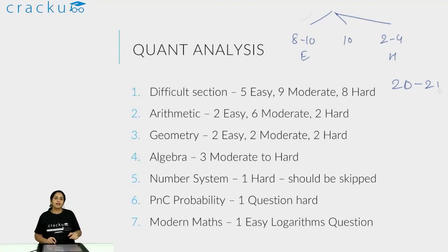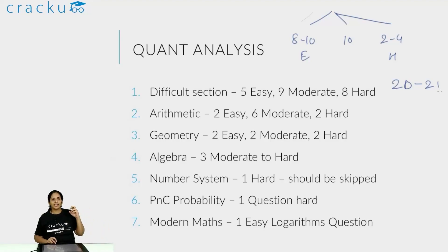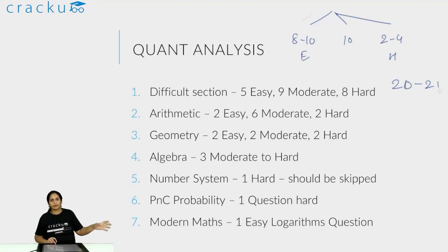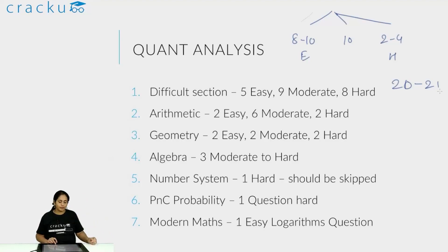Always remember: consider what your peer group is going through — you have to outperform them. Do not index yourself to getting 40 or 60 in quant. What you should really think about is that I should outperform my peers. So even at 25, if I am outperforming my peers, it should not really matter much.